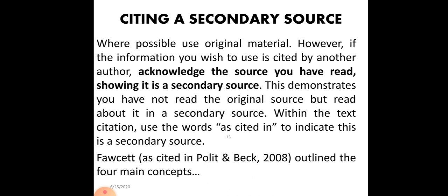Citing a secondary source: sometimes instead of citing the primary source, we cite a secondary source. Where possible, use the original material. However, if the information you wish to use is cited by another author, acknowledge the source you have read by showing it is a secondary source — you must mention that 'this work has been cited in.' This demonstrates you have not read the original source but read about it in a secondary source. Within the text, use the phrase 'as cited in' — for example, 'Fawcett as cited in Polit & Beck, 2008'.